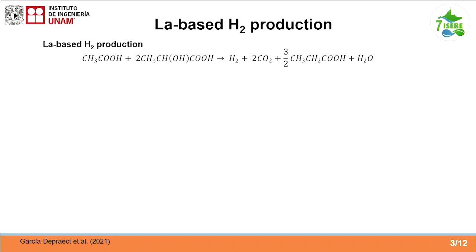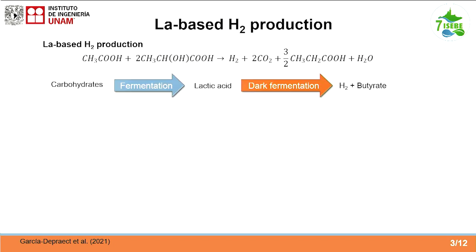Recently, an alternative to overcome this issue has been to use lactate-based hydrogen production, because hydrogen can also be produced from lactic acid using acetate and producing CO2 and butyric acid. The idea is to perform a first fermentation of the carbohydrate-rich wastewater in order to transform all the carbohydrates to lactic acid, and then in a second step, you obtain the hydrogen.